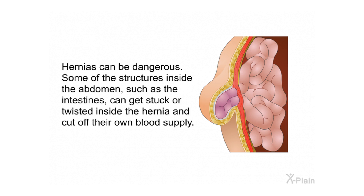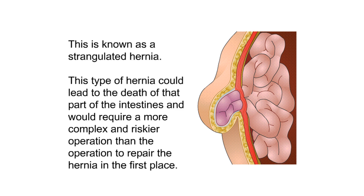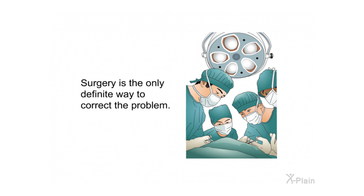Hernias can be dangerous. Some structures inside the abdomen, such as the intestines, can get stuck or twisted inside the hernia and cut off their own blood supply. This is known as a strangulated hernia. This type of hernia could lead to the death of that part of the intestines and would require a more complex and riskier operation. Surgery is the only definite way to correct the problem.